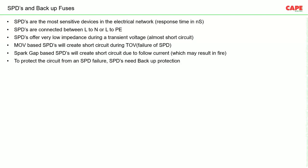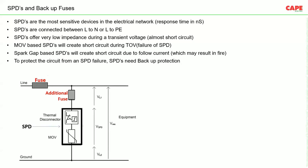Every SPD will eventually reach end of life. There are two possibilities: it may fail in open circuit mode — in which case it simply disconnects from the circuit with no problem — or it may fail in short circuit mode, where short circuit current flows from the line through the SPD to ground. The resulting energy dissipation is very high, and the SPD can catch fire. We must ensure that the SPD is disconnected from the circuit as early as possible.